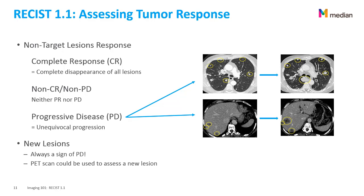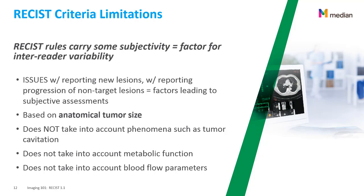For RECIST 1.1, any new lesion at any time point is a sign of progressive disease. In some cases, a PET scan can be used to verify whether the new lesion is malignant. RECIST has some limitations: its rules carry subjectivity, which can lead to inter-reader variability — for example, with reporting new lesions or the progression of non-target lesions. RECIST is based on anatomical tumor size and does not account for tumor cavitation, metabolic function of the tumor (which can be monitored using a PET scan), or blood flow parameters.